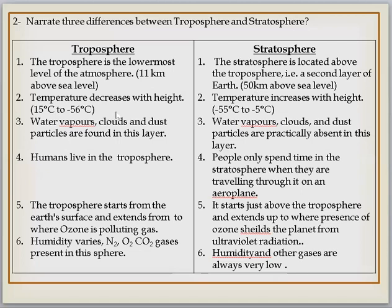If we talk about temperature, as we go in the upper direction it will decrease. In troposphere it goes from 15 degrees Celsius to minus 55-56 degrees Celsius. And if we talk about stratosphere, the temperature increases from minus 55 degrees Celsius to minus 5 degrees Celsius. The third comparison is that in troposphere where we are present, we find water vapor, clouds, dust particles, and different types of gases. In stratosphere, dust and clouds are practically absent.